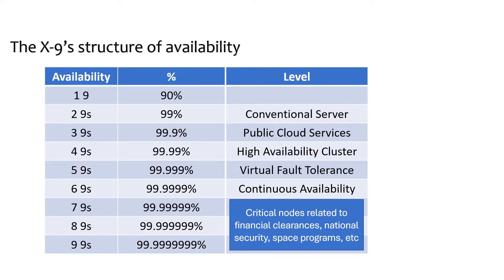The important thing to note is that availability only guarantees that we will receive a response — it doesn't guarantee the most up-to-date data. So availability is different from integrity in terms of data and responses. Here I have given the table of the nine structure.